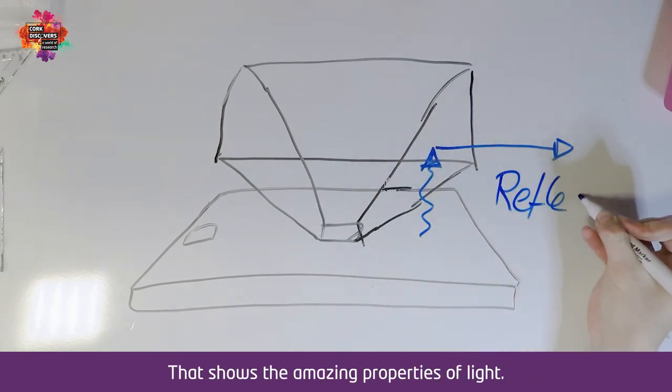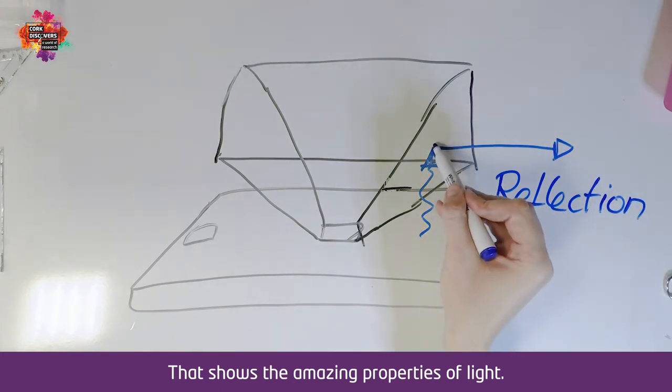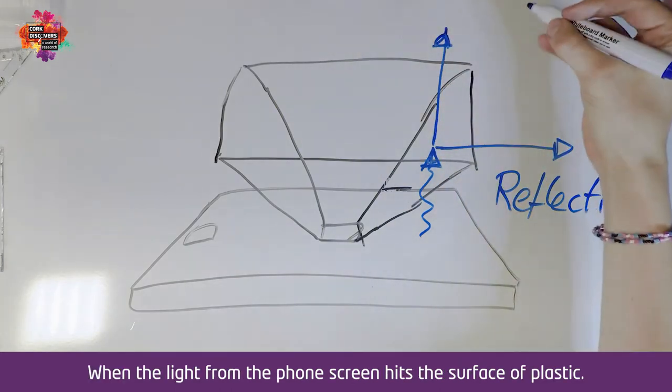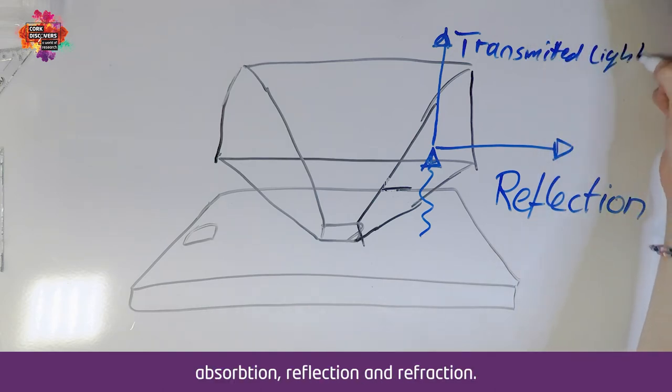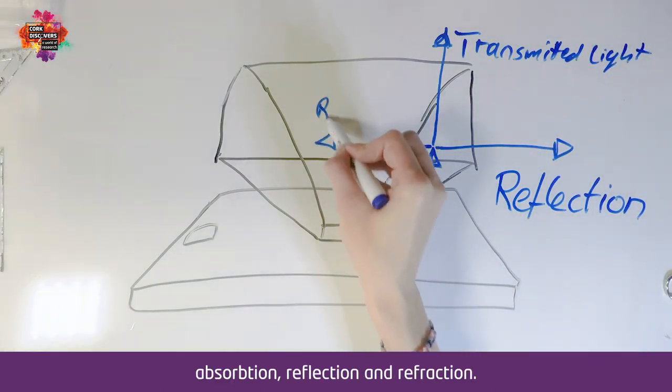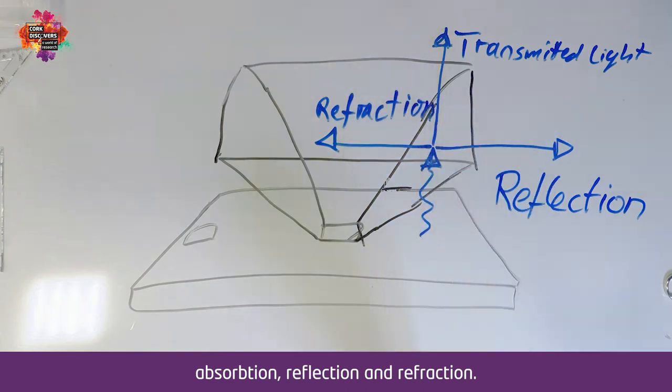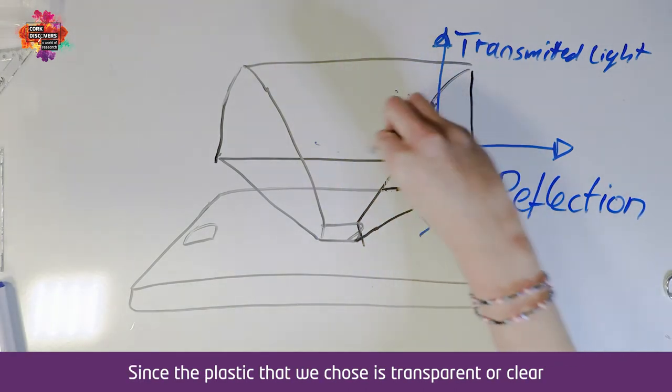That shows the amazing properties of light. When the light from the phone screen hits the surface of plastic, three phenomena can happen: absorption, reflection, and refraction. Since the plastic that we chose is transparent or clear,